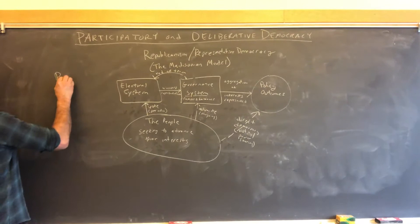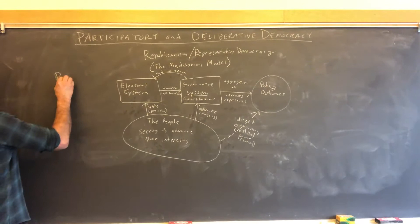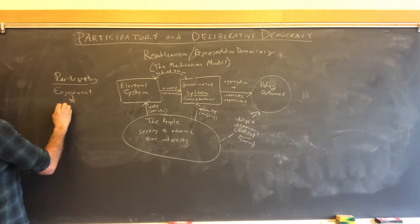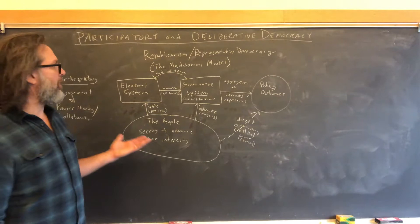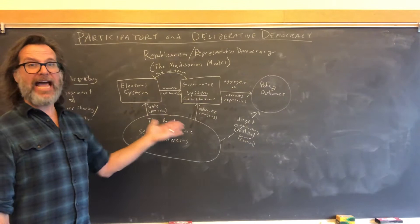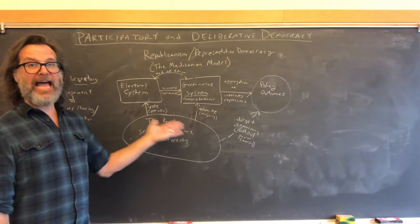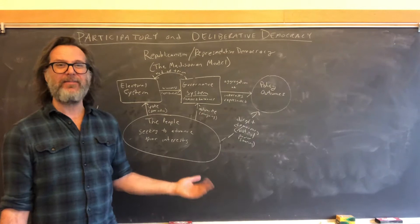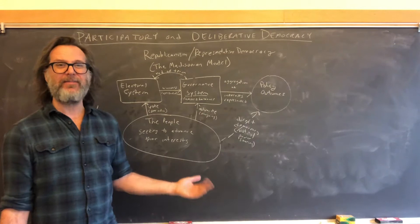What participatory democracy is looking for is active engagement and power sharing and collaboration. This is contrasted with the Madisonian model's emphasis on voting and advocacy. Voting and advocacy are still part of the participatory model — there's no claim that people shouldn't be doing those things — but there should additionally be engagement and power sharing. Direct democracy is the very first, most primitive step towards power sharing. It is a form of power sharing, but it's a pretty thin one.